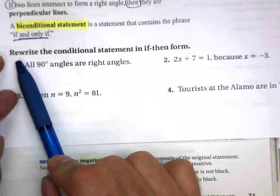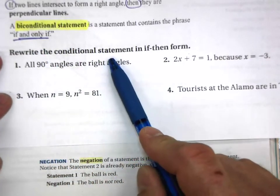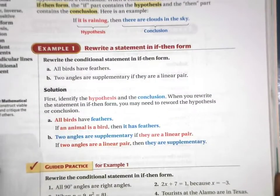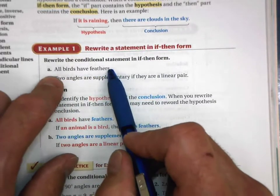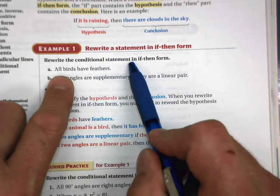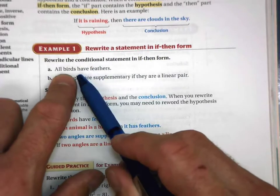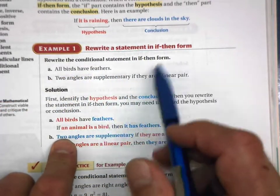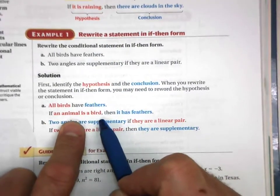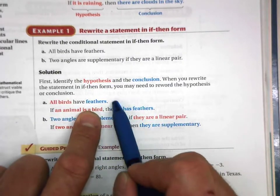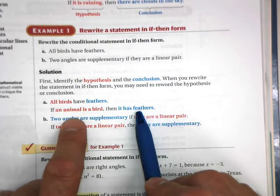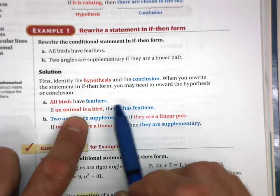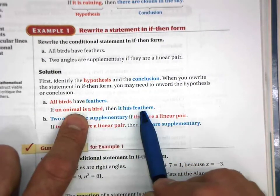At the bottom of your notes, your responsibility is to rewrite conditional statements in if-then format. For example: 'All birds have feathers' becomes 'if an animal is a bird, then it has feathers.' The hypothesis is in red, the conclusion is in blue. Here's another: 'Two angles are supplementary if they are a linear pair' — a linear pair looks like two angles on a straight line — becomes 'if two angles are a linear pair, then they are supplementary.' Notice the original had the conclusion first and the hypothesis after.